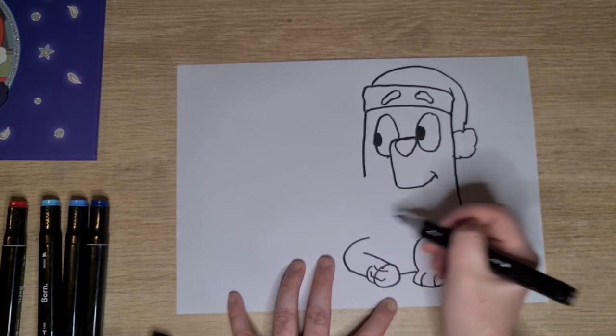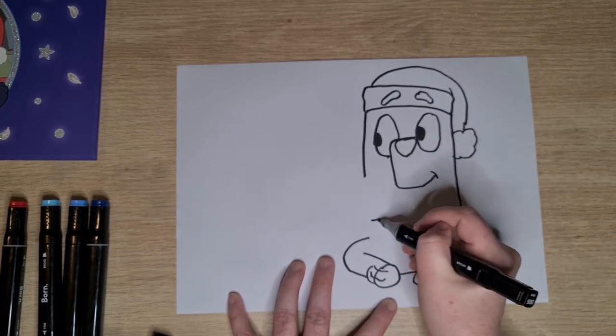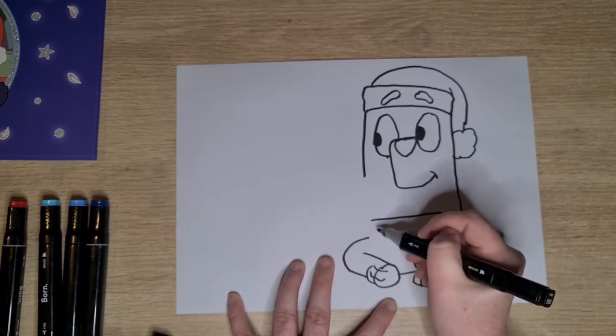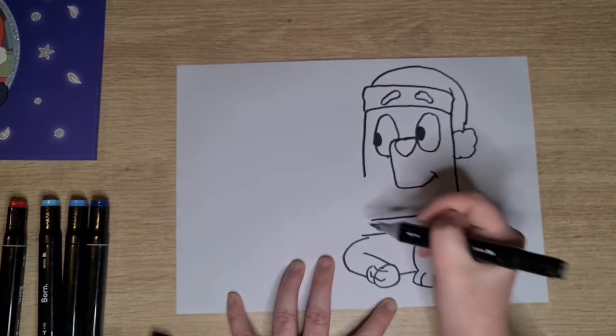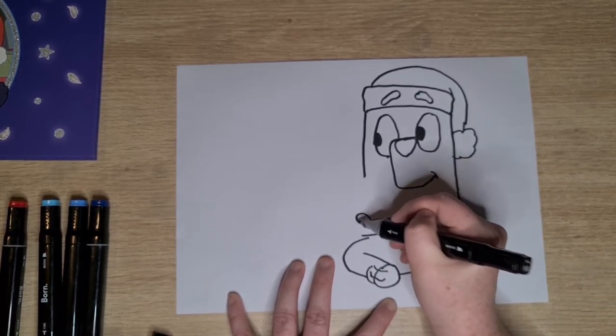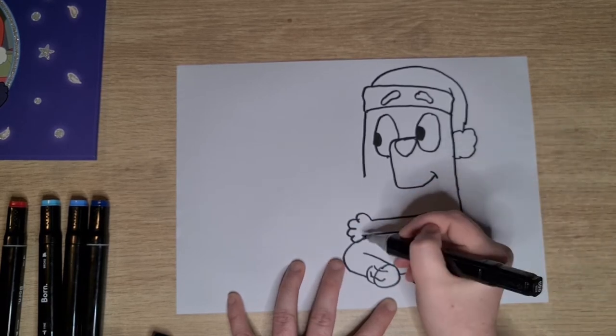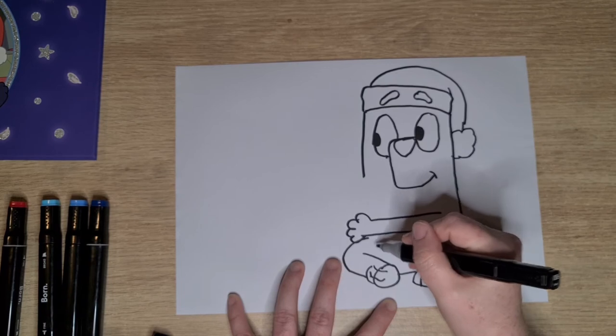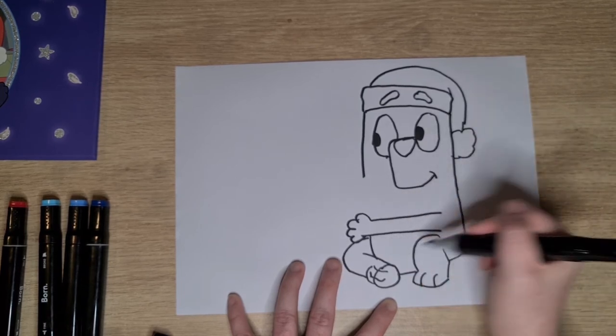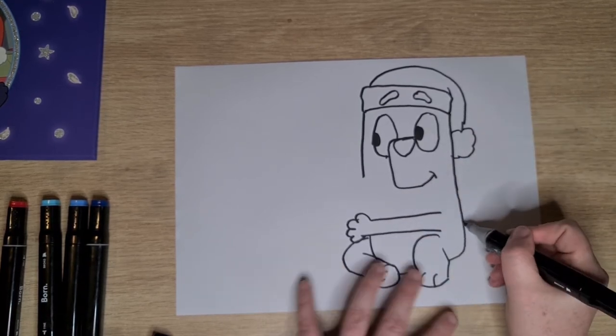So that's Bluey's other leg. And then Bluey's got her arm out. So we'll do that as well. And one, two, three, paws. Curve of Bluey's belly. And don't forget Bluey's tail.